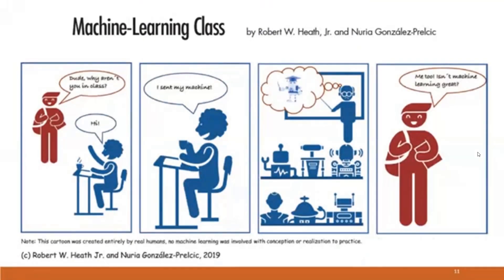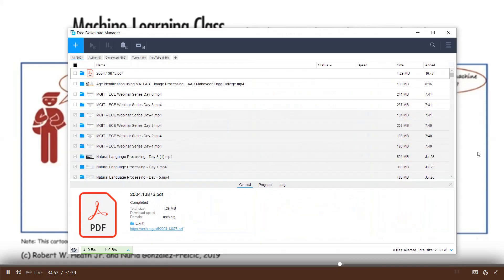One more funny meme: the red guy asks the blue guy, 'Hey, why aren't you in class?' The blue guy says, 'I sent my machine.' So his machine is learning on his behalf. Isn't machine learning great? Maybe in the future we'll all send our machines to learn what happens in class — but I really ask my students not to practice this, because I want to talk to them and it's always better than passive robots.